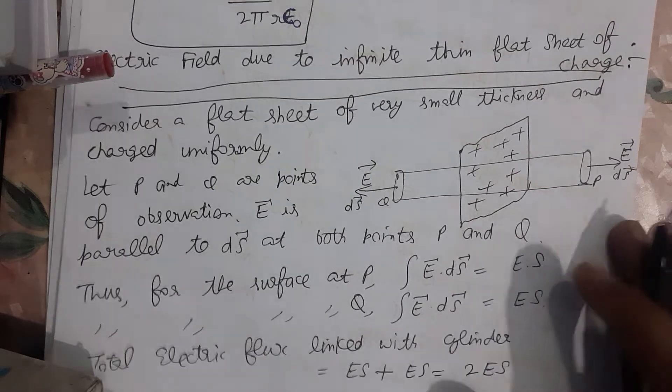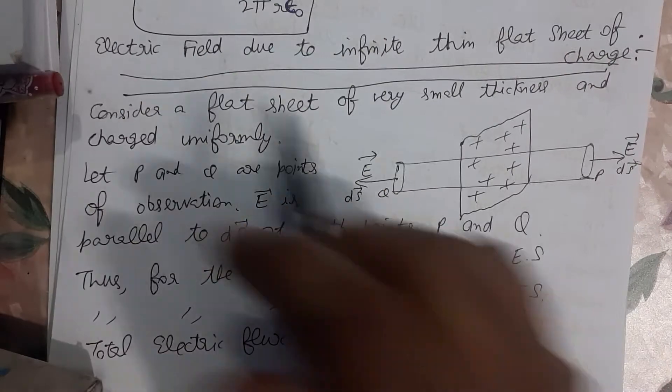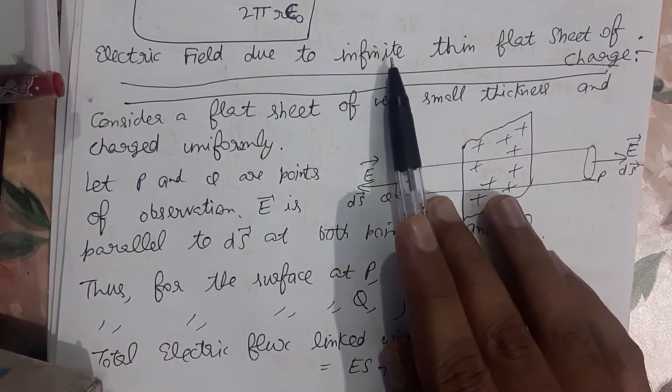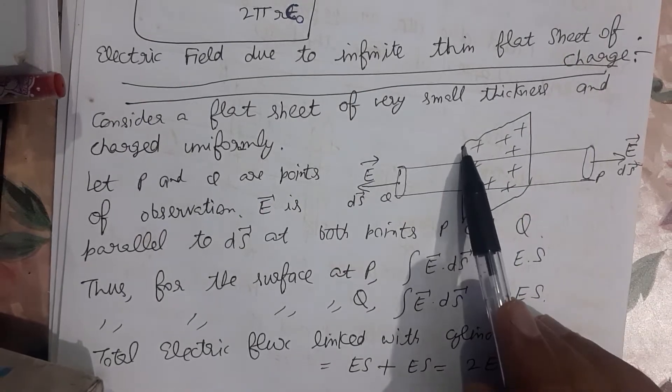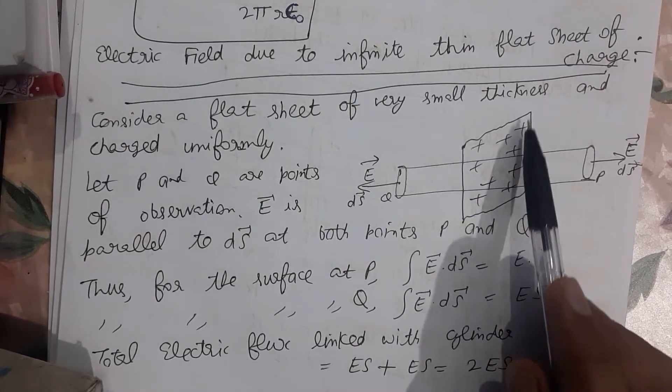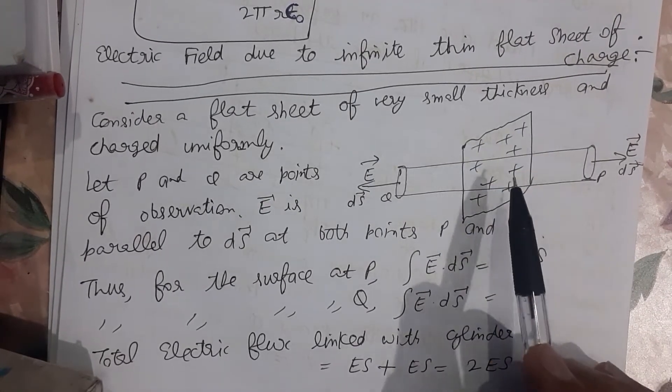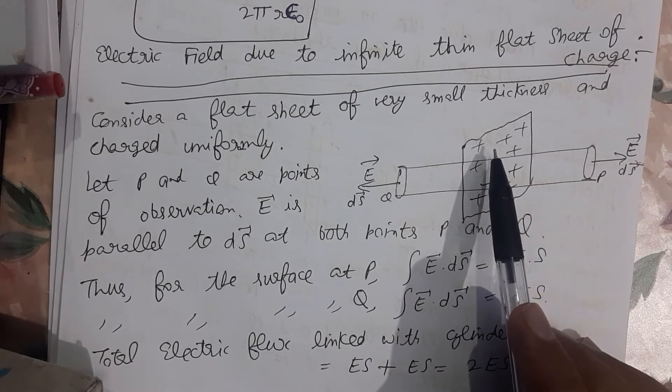Next one is to find out electric field intensity due to an infinite thin flat sheet of charge. We have a thin flat sheet in the shape of a rectangle. This sheet is very thin.